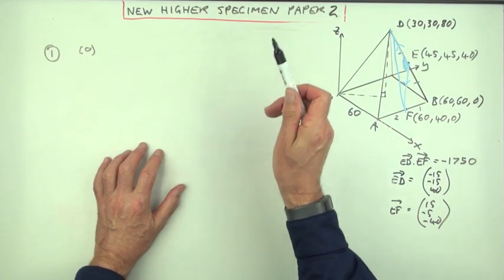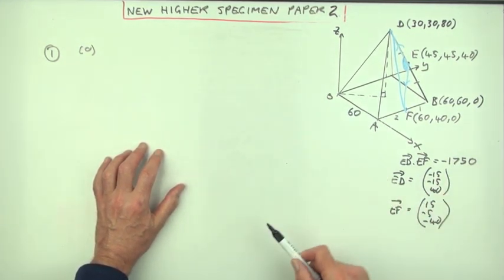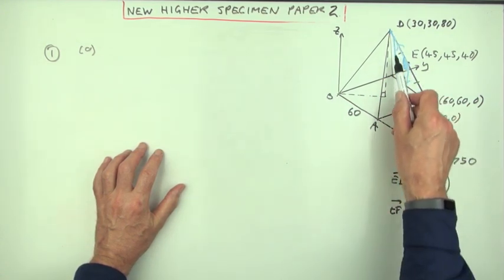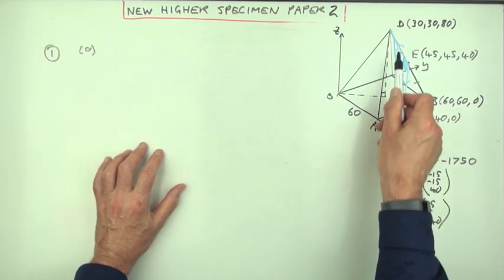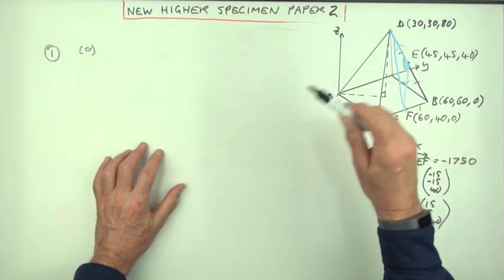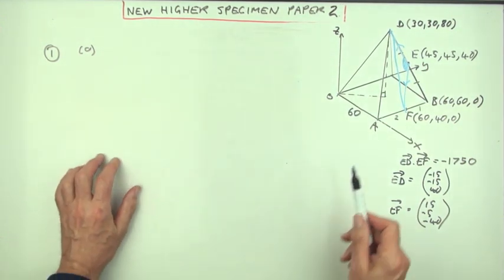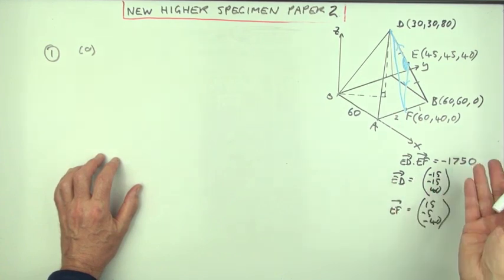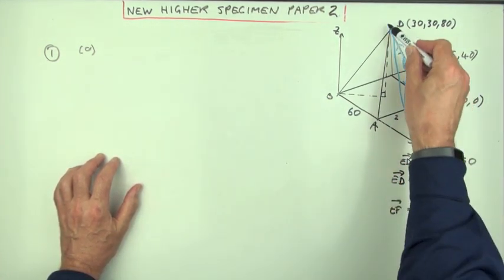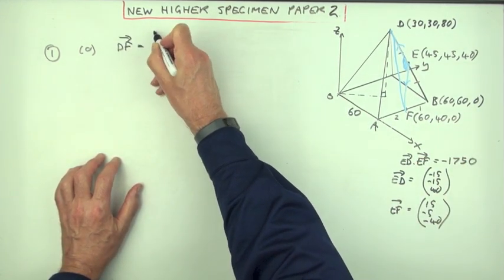Now, it did say hence or otherwise. You're kind of forced into the hence, because you had to work out the scalar product anyway. But there is the other way, which is just to consider the triangle that contains D, E and F. Because you know the lengths, or you can work out the lengths of the three sides of that triangle. You've already got part of the answers. I've got the components of ED, so I can get its length. I've got the components of EF, so I can get its length. And I can work out the components of DF. But that'll be new, so I'll have to work that out myself.